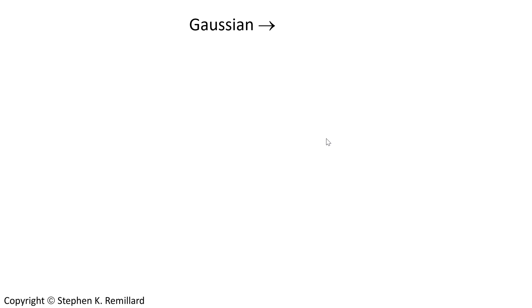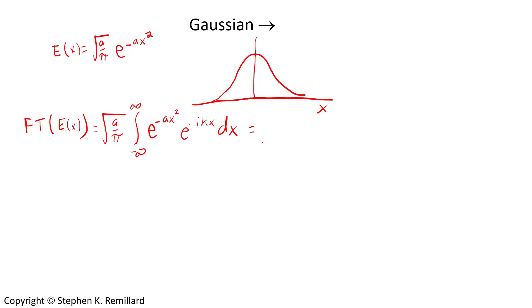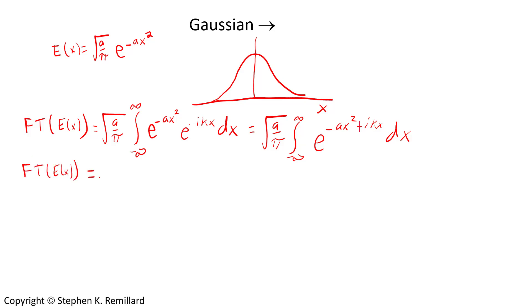One of the most important Fourier transforms is that of the Gaussian. In quantum mechanics, this is your free particle propagator. The function looks like a bell curve. We'll consider a simple Gaussian located at the origin, where constant a is associated with the width of the Gaussian, and the coefficient out front, square root of a over pi, comes from normalization for quantum mechanical purposes. Taking the Fourier transform — this is a tricky integral to solve, which can be solved by completing the square in the exponential. When you do solve the integral, you find that the Fourier transform of e to the minus ax squared, with that coefficient in front, is e to the minus k squared over 4a.